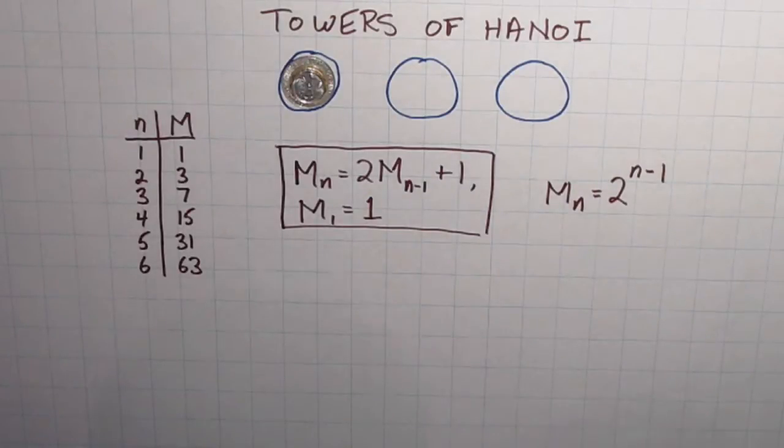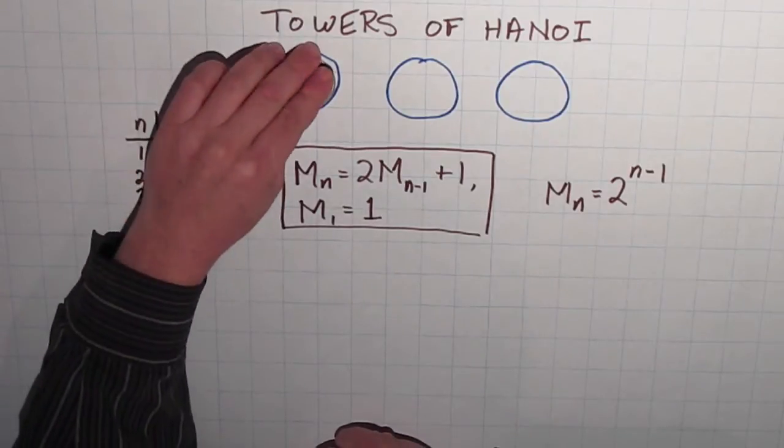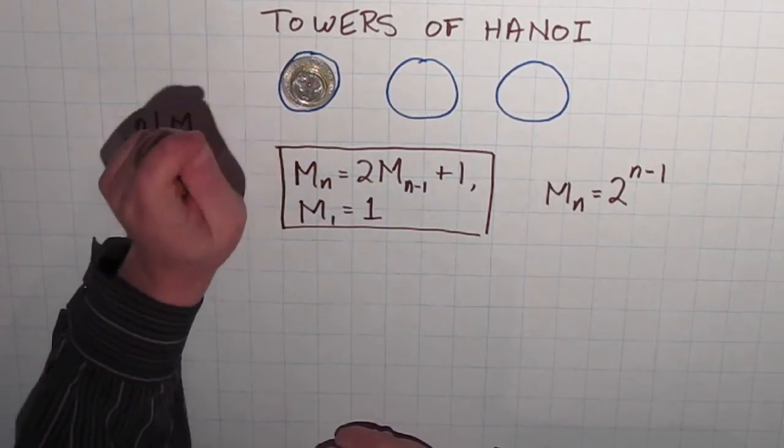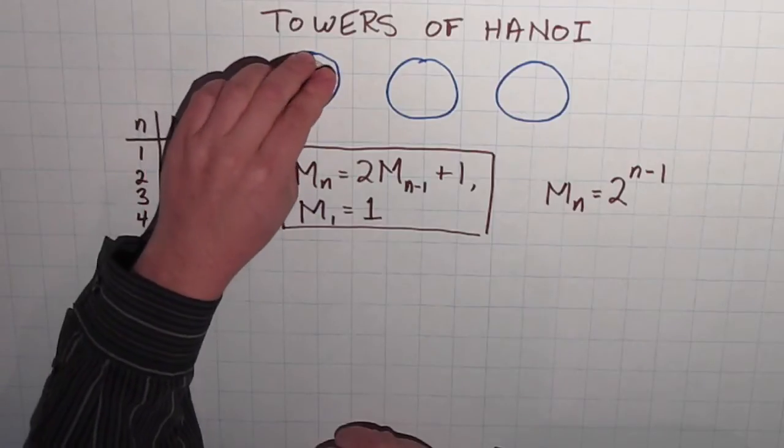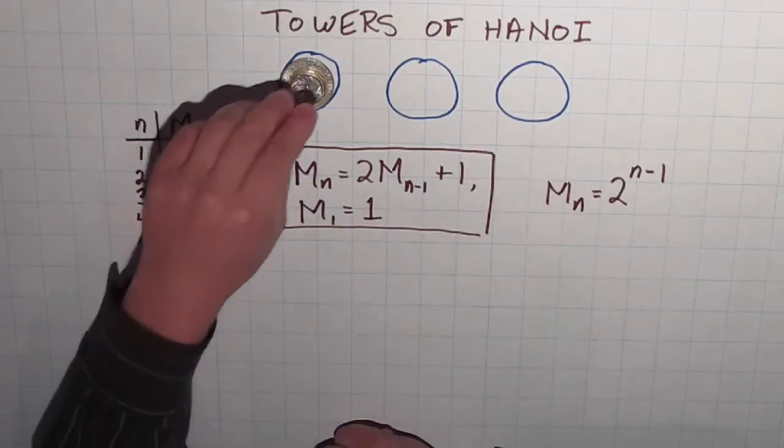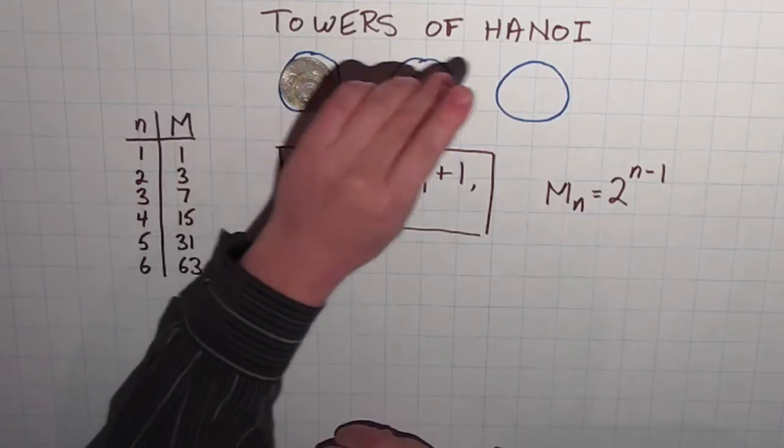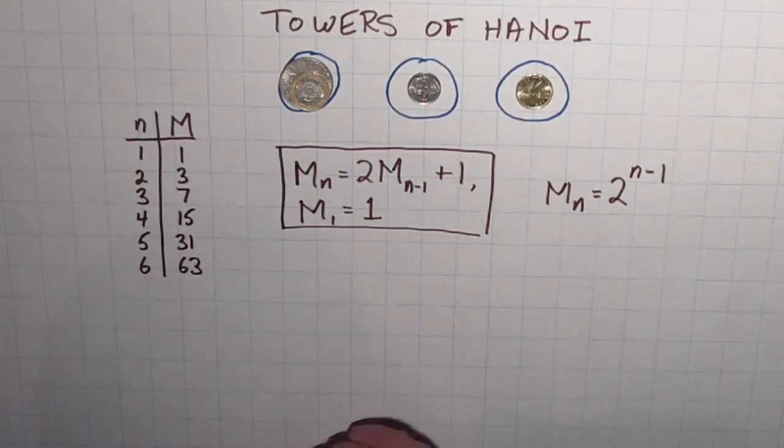Hi, in the last video we were exploring the Towers of Hanoi. That's a puzzle where you take a stack, I've got coins here, but it can be lots of different objects. The goal of the puzzle is to move the stack of coins from this circle to the third circle, moving only one coin at a time, and never being able to put a bigger coin on top of a smaller coin.